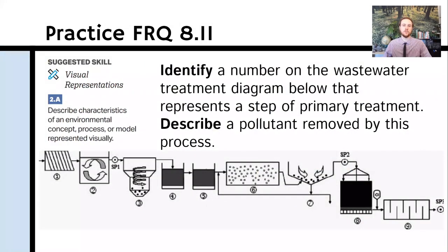For practice FRQ 8.11 today, take a look at this diagram and identify a number on the wastewater treatment diagram that represents a step of primary treatment. Then describe specifically which pollutant is being reduced or removed by that process.